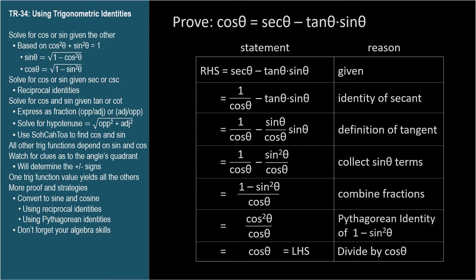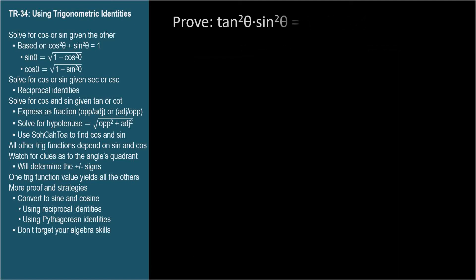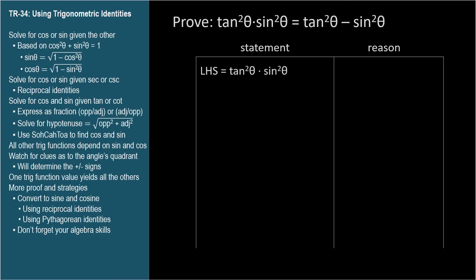Prove tangent squared theta times sine squared theta equals tangent squared theta minus sine squared theta. Well, if we transform the left-hand side, we'll need to end up with two terms, since the right-hand side has two terms. So a good strategy might be to replace tan squared theta on the left with its Pythagorean identity, secant squared theta minus 1, to give us two terms.